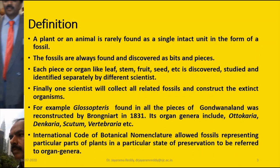When it comes to the discovery of a fossil, no plant or animal is found in a single intact unit. Very rarely you find a fossil in an intact form. Each fossil that you discover is only discovered as a bit or a piece of a plant. For example, a leaf, stem, fruit, or seed of a plant are discovered individually by different scientists in different locations. Finally, scientists sit together and identify the different organs of a particular plant and reconstruct the organism.